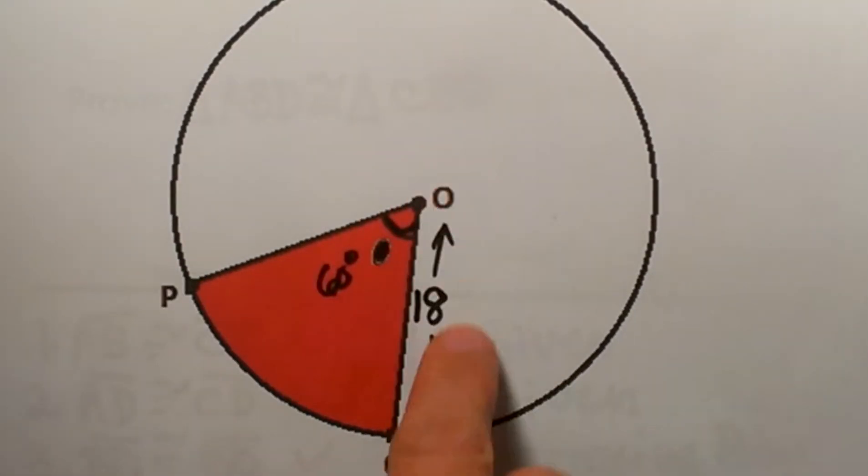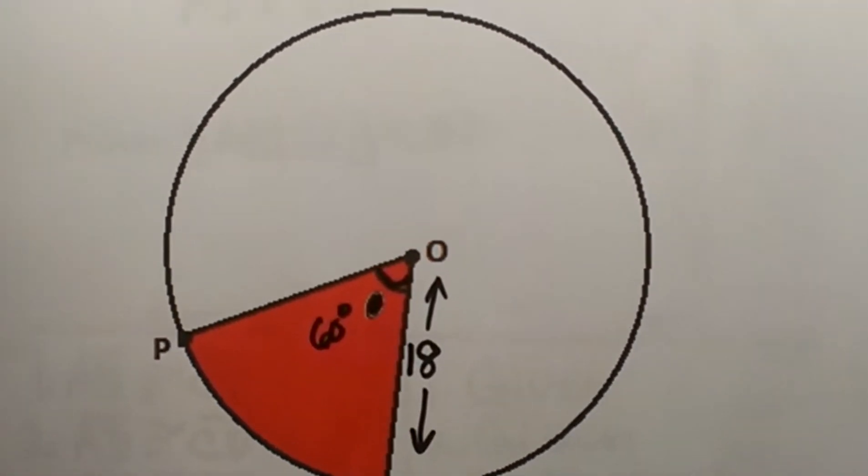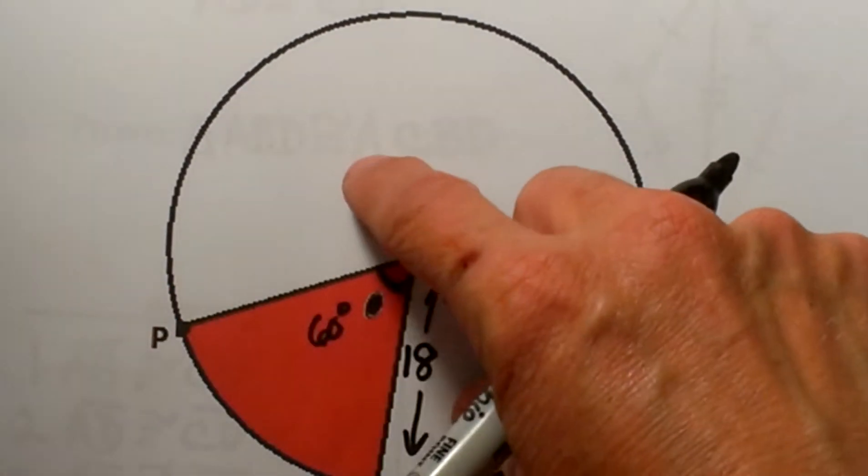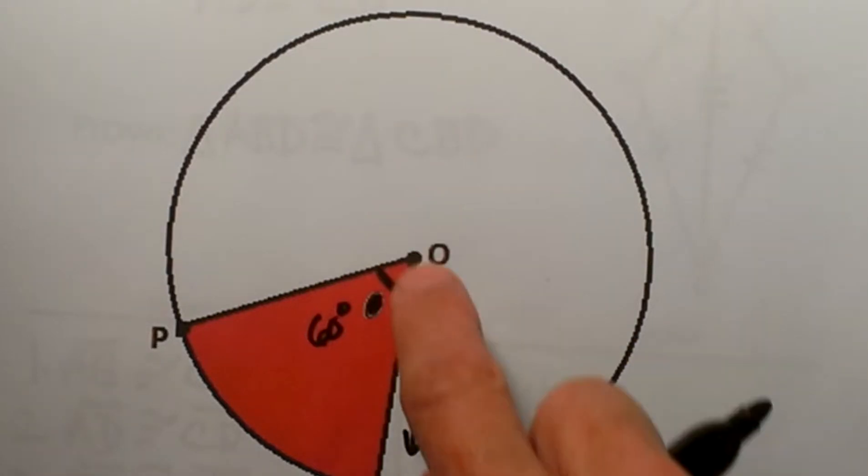A sector is what I call a pizza slice. So if you have a large pizza and you slice that one part of it, it is that one area of that whole section of the pizza.